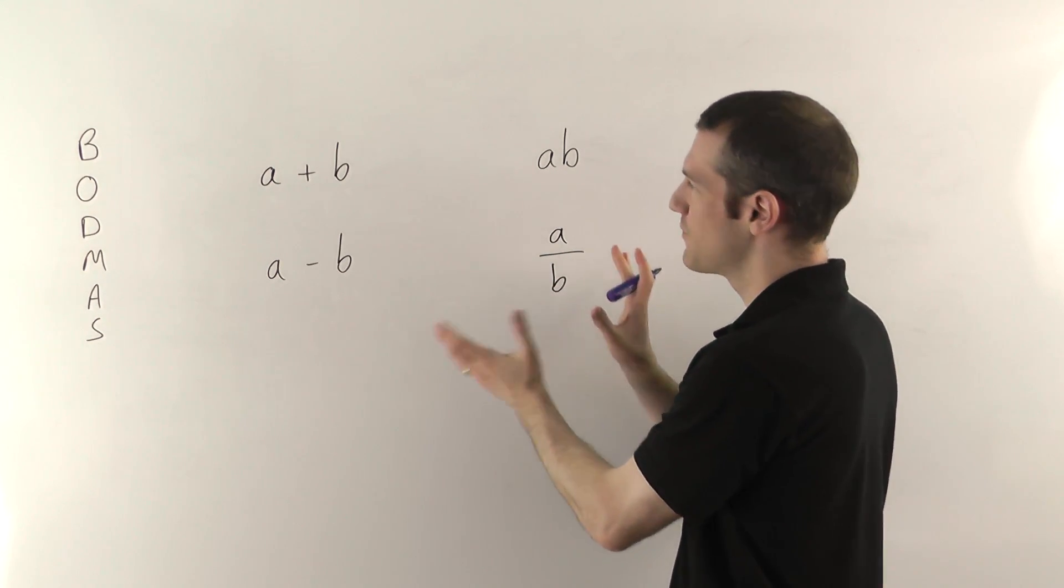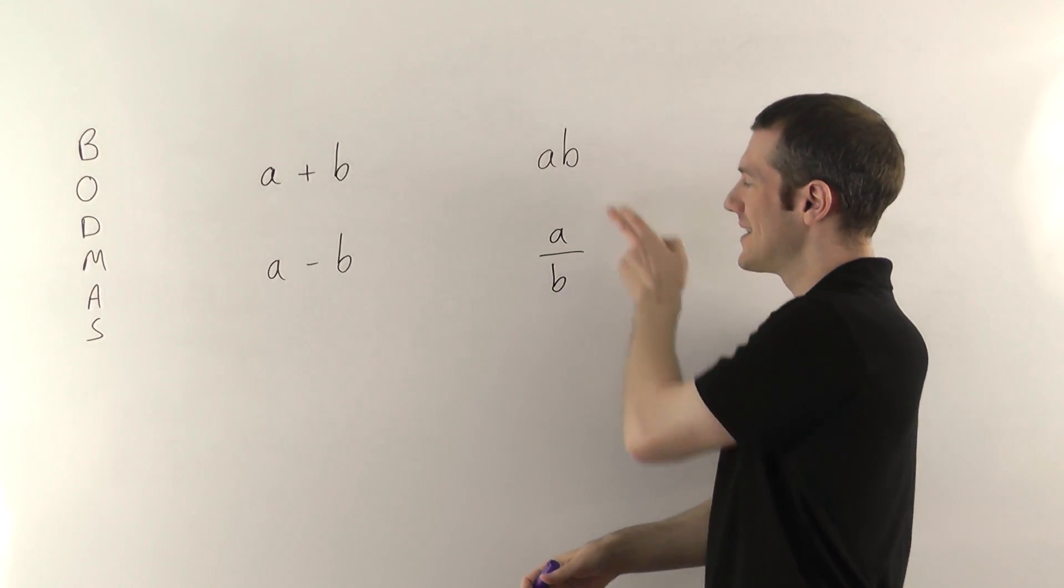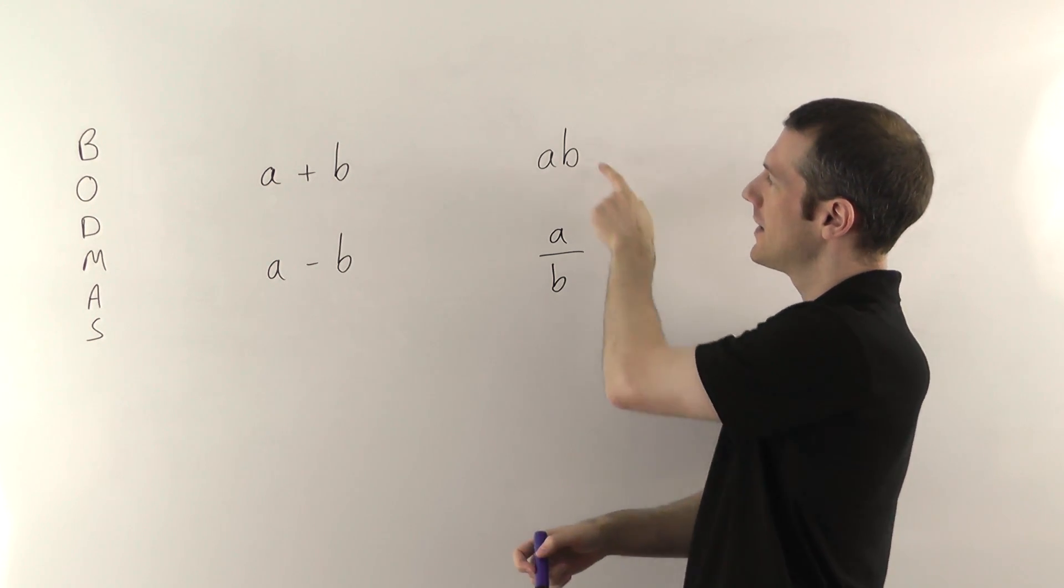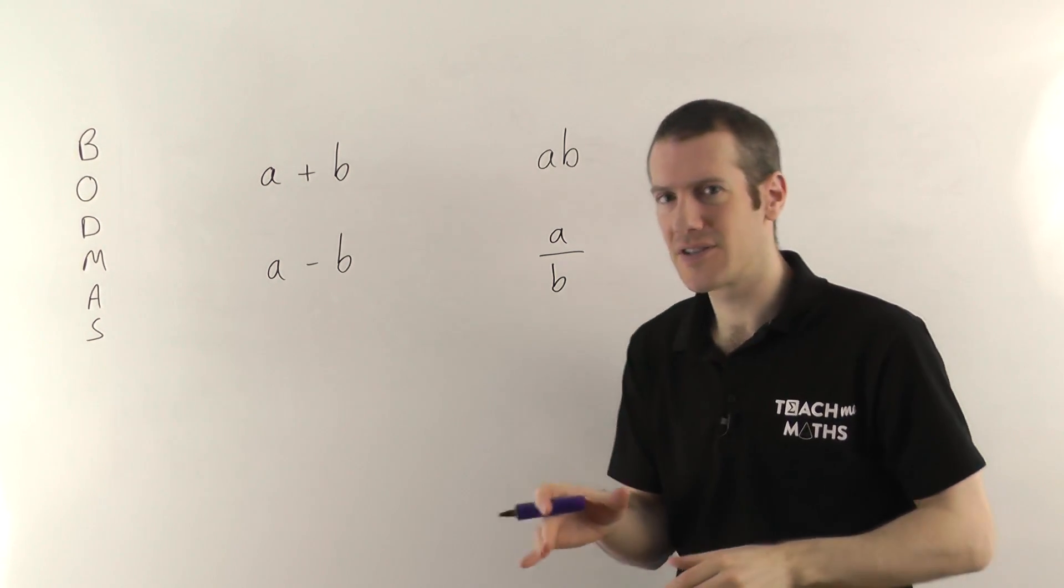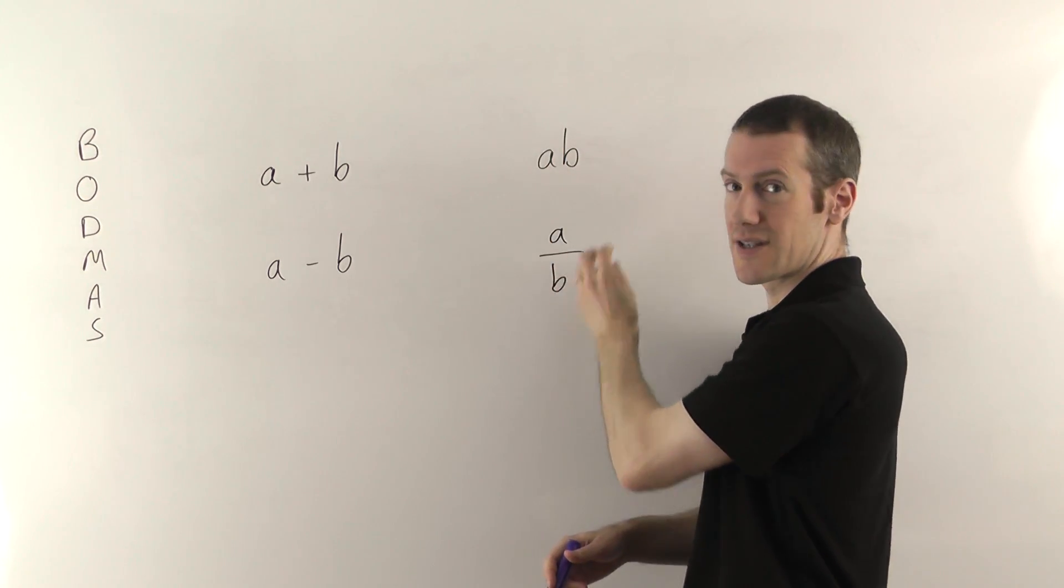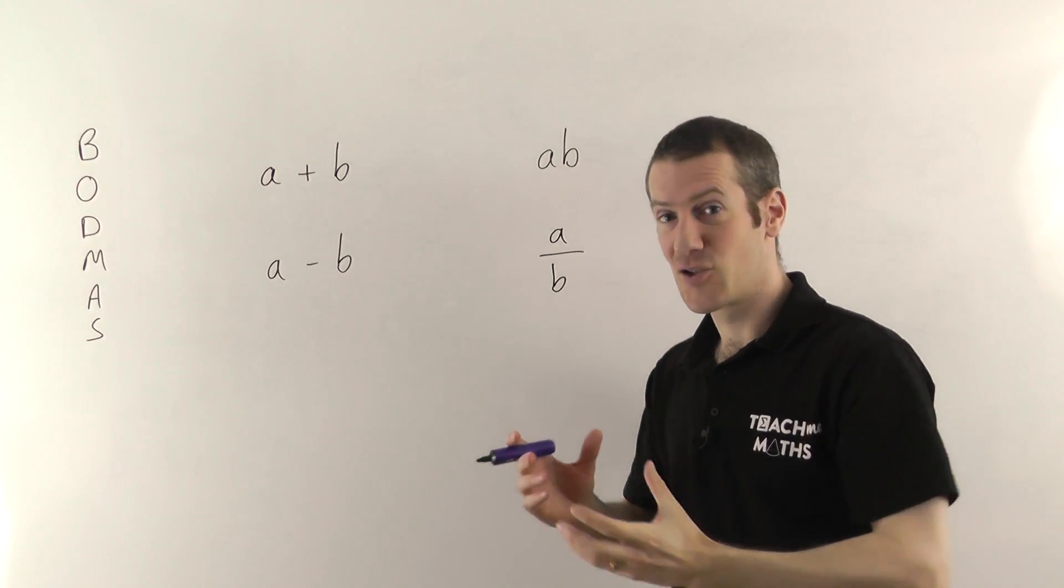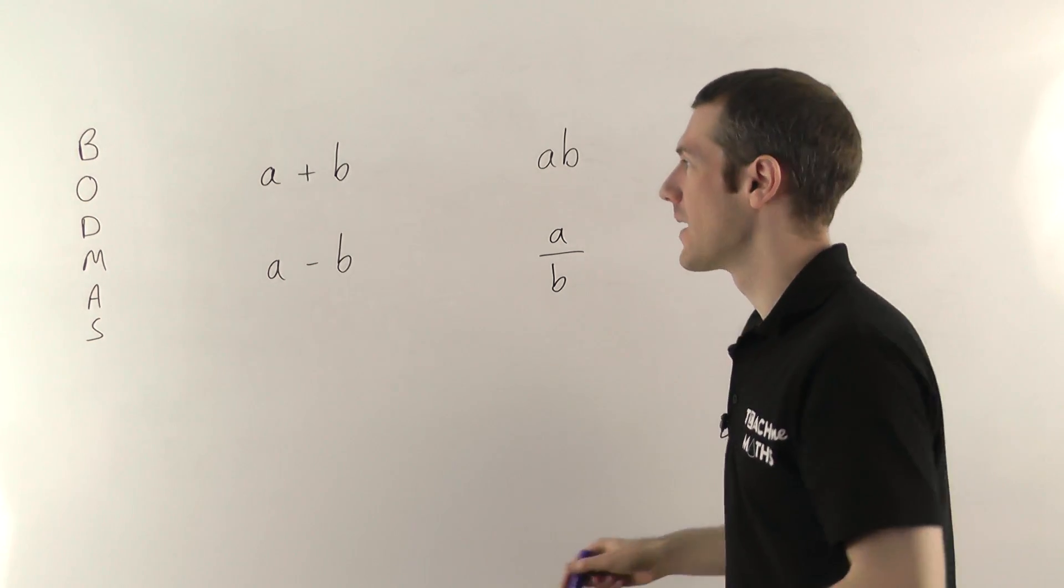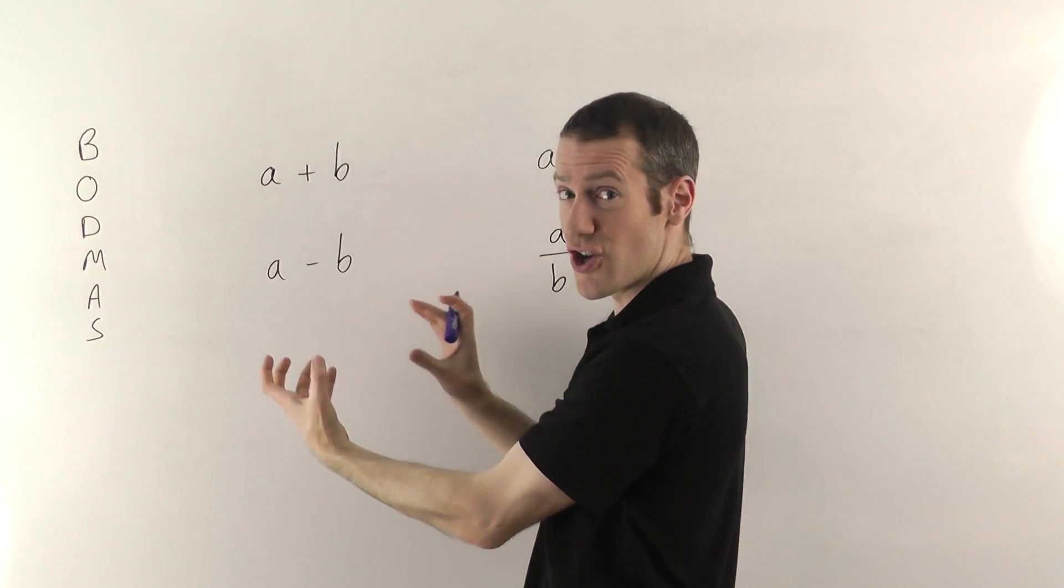The reason I'm spreading out like this is because I want you to draw your attention to these two. Each of these things is what we call a term in algebra. And that definition is quite important. Whenever you multiply or divide things together, that whole blob of stuff is called a term. Any time you've got adding or subtracting, that separates the terms.